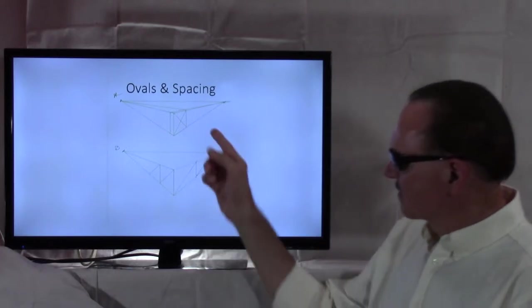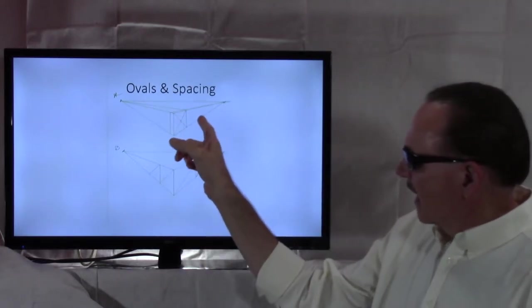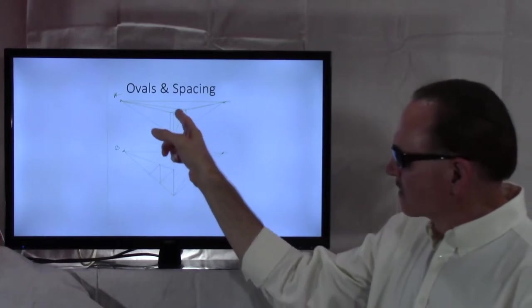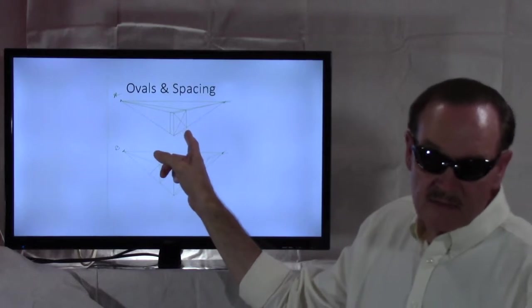To find the center of anything, as we've done before, you draw an X using the opposite corners and you find the center of this particular box is right here.